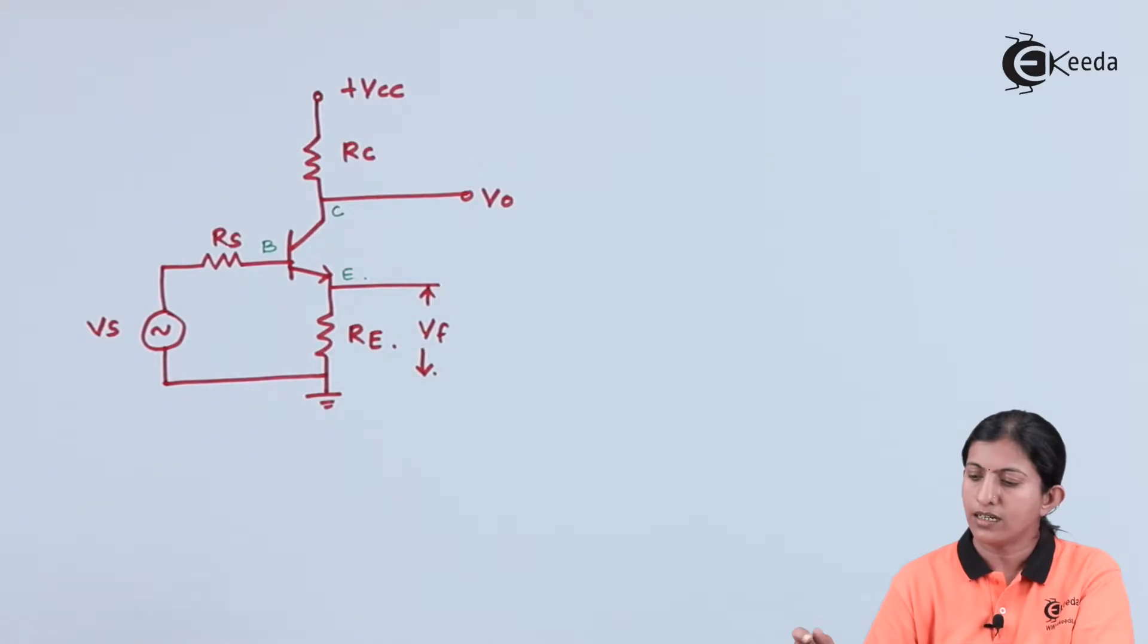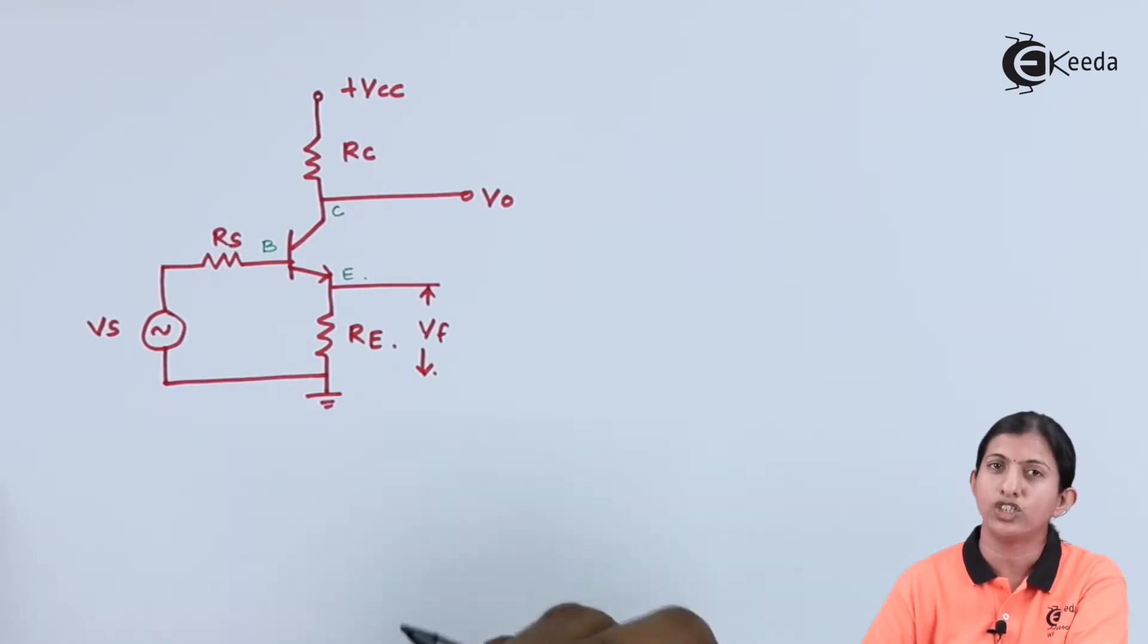So, this is the diagram in which we have to find out what type of negative feedback amplifier it is, whether it is voltage series, voltage shunt, current series, or current shunt.